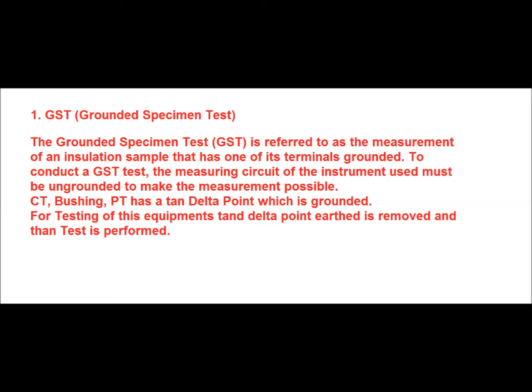In the case of CT bushing and PT that has a tan delta point which is normally at ground or earth, to test this equipment in a substation, the tan delta point is removed from the earth. Then one electrode is connected to the HV side and the other is connected to the tan delta point, and then the test is performed.